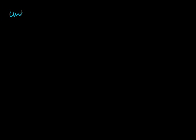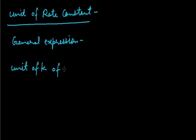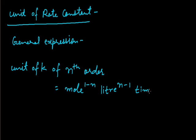Unit of rate constant. Rate constant has different units for reaction of different order. General expression of unit of rate constant is as follows. Unit of rate constant k of nth order, that is equal to mol 1 minus n, liter n minus 1, time minus 1.